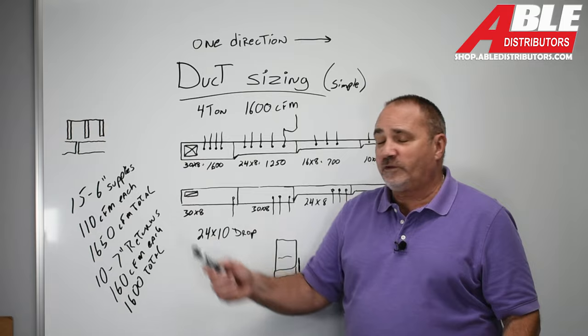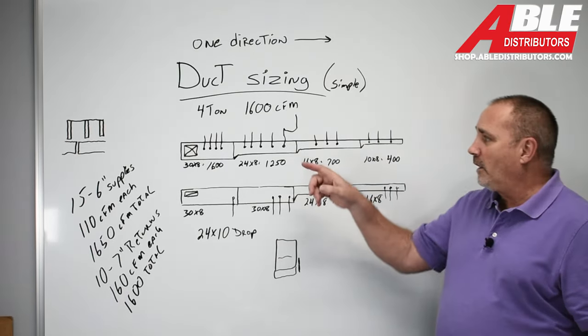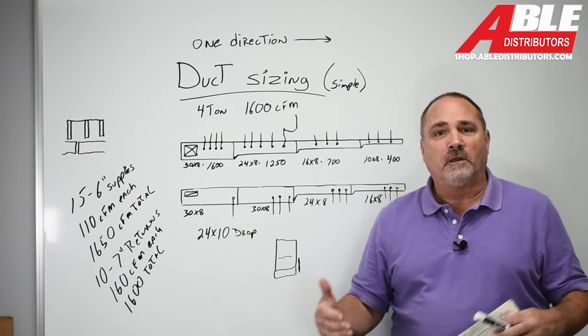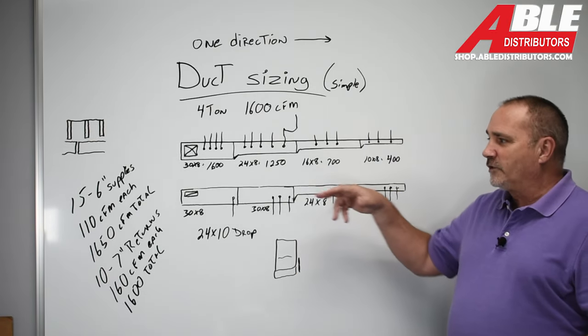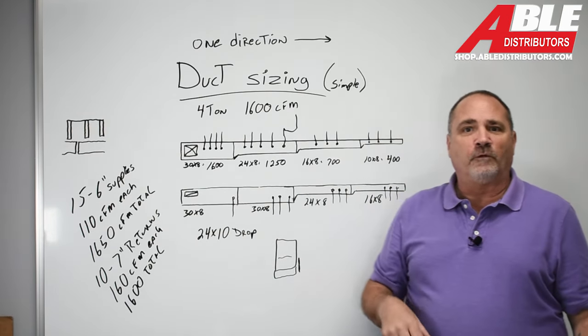10 seven-inch returns, 15 six-inch supplies. I know what you're thinking. You're probably thinking, well, I might have a four-inch supply for a little walk-in closet or a little powder room. Again, just figure it out. You can take a six-inch supply off and maybe do two fours if you have that.